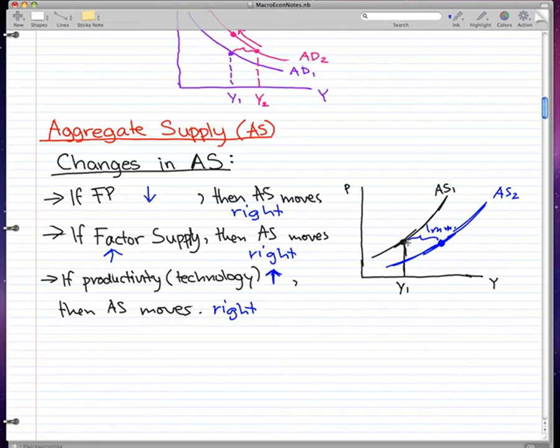And this graph that I drew here represents that. So we'll have increased output Y2 at the same price. Now after a short while, like a short run period, the price will be reflected in the graph. So then the price would drop.